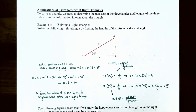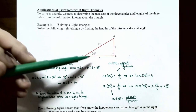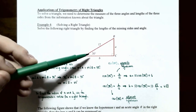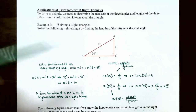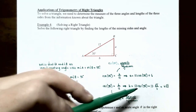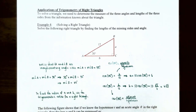Now we only have the length of side B to find. Since B is the adjacent side to the 30-degree angle and the hypotenuse is 12, we use cosine of 30 degrees, which is adjacent divided by hypotenuse, giving cosine of 30 degrees equals B divided by 12. Multiplying both sides by 12, B equals 12 times cosine of 30 degrees. Since cosine of 30 degrees is √3/2, B equals 6√3. We've now solved the triangle — all three side lengths and all three angles are known.